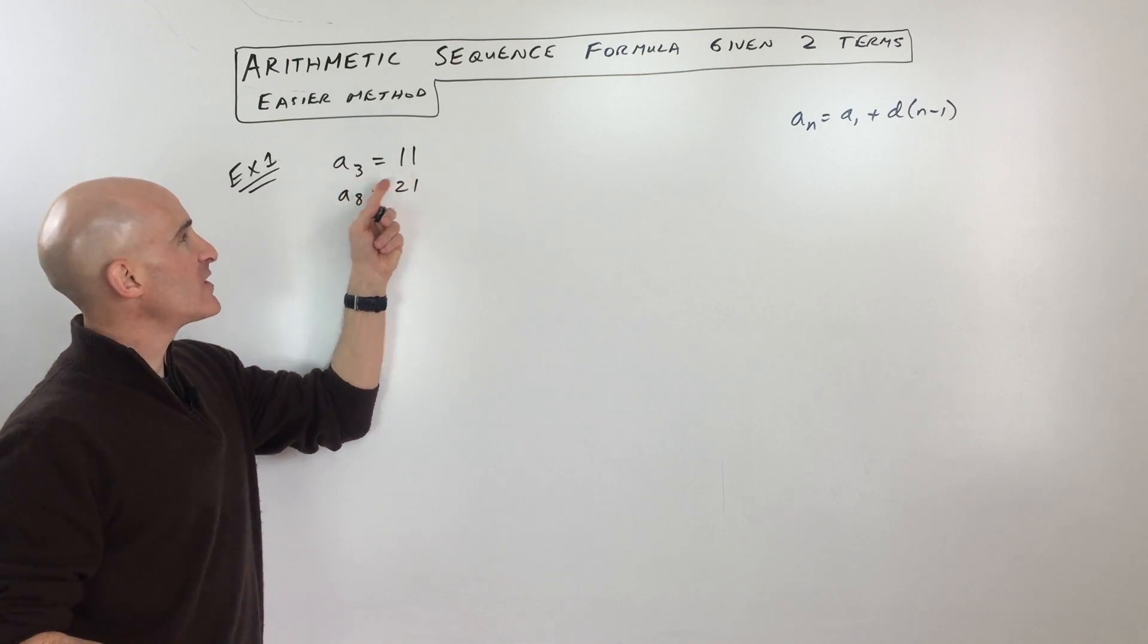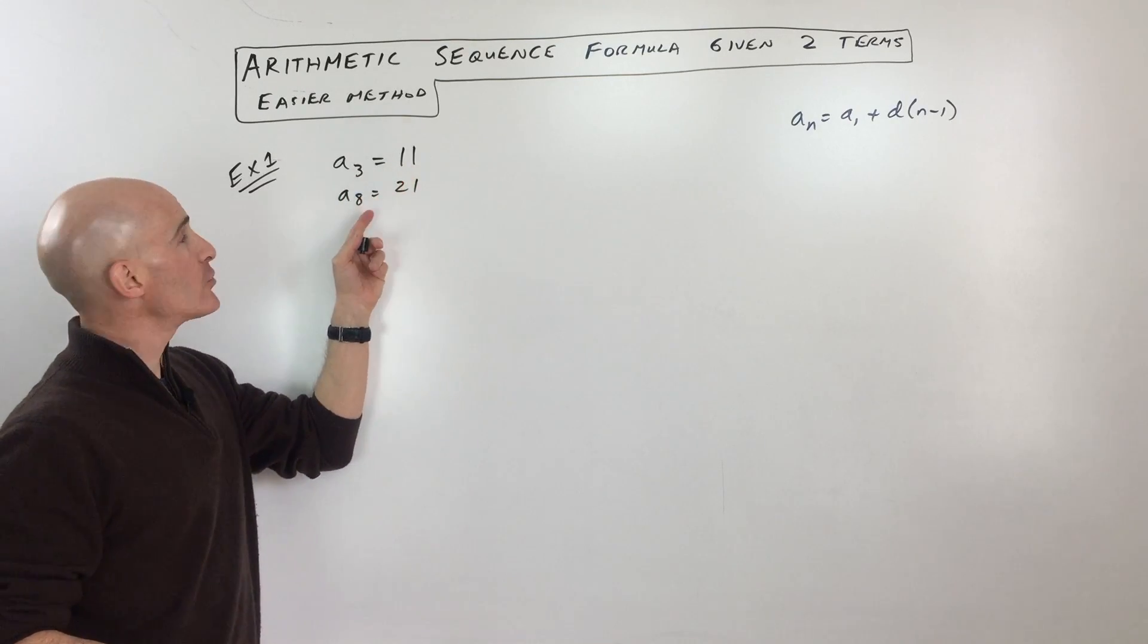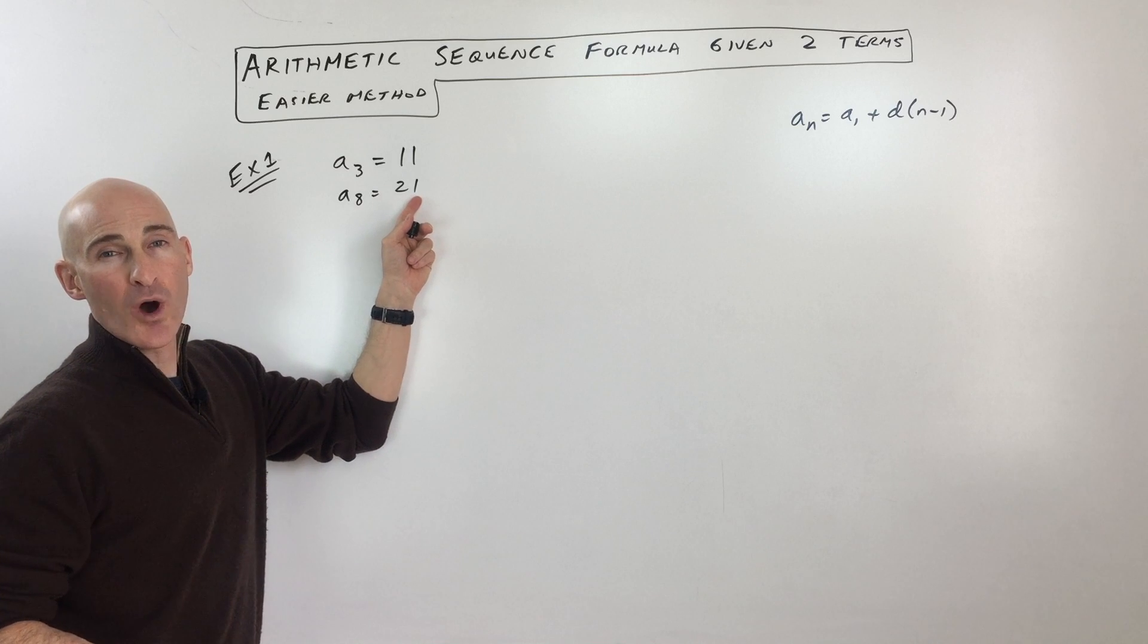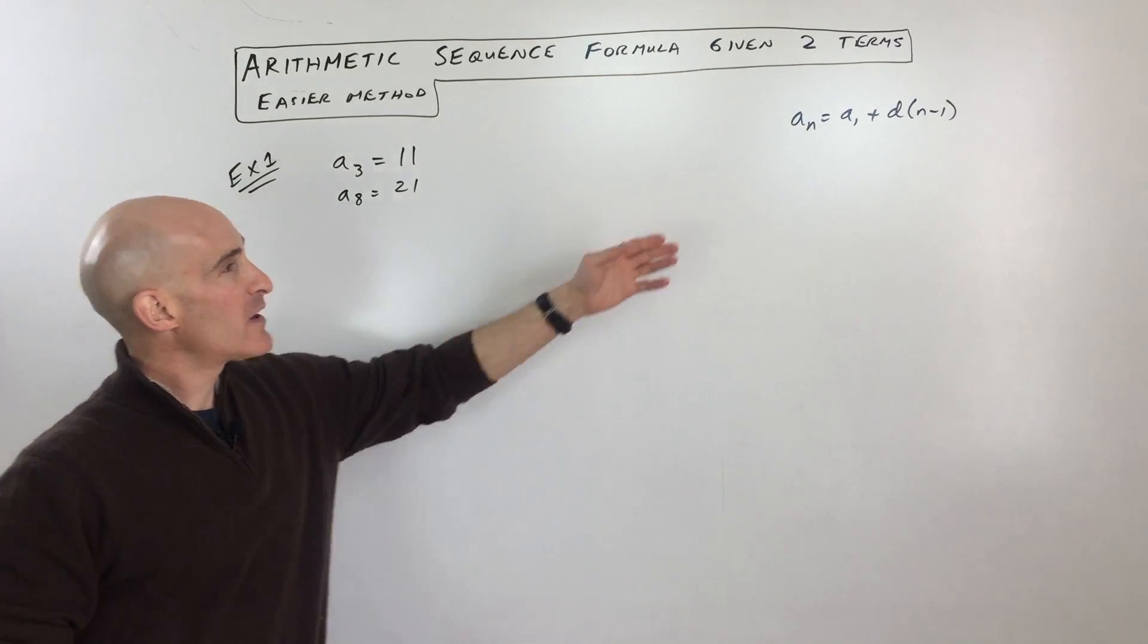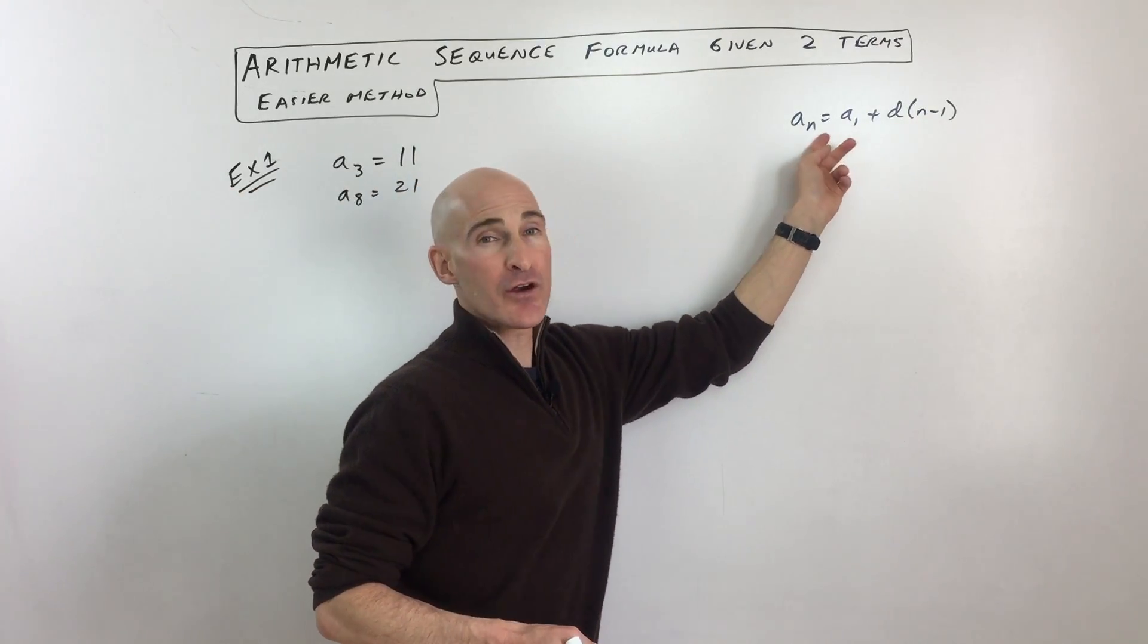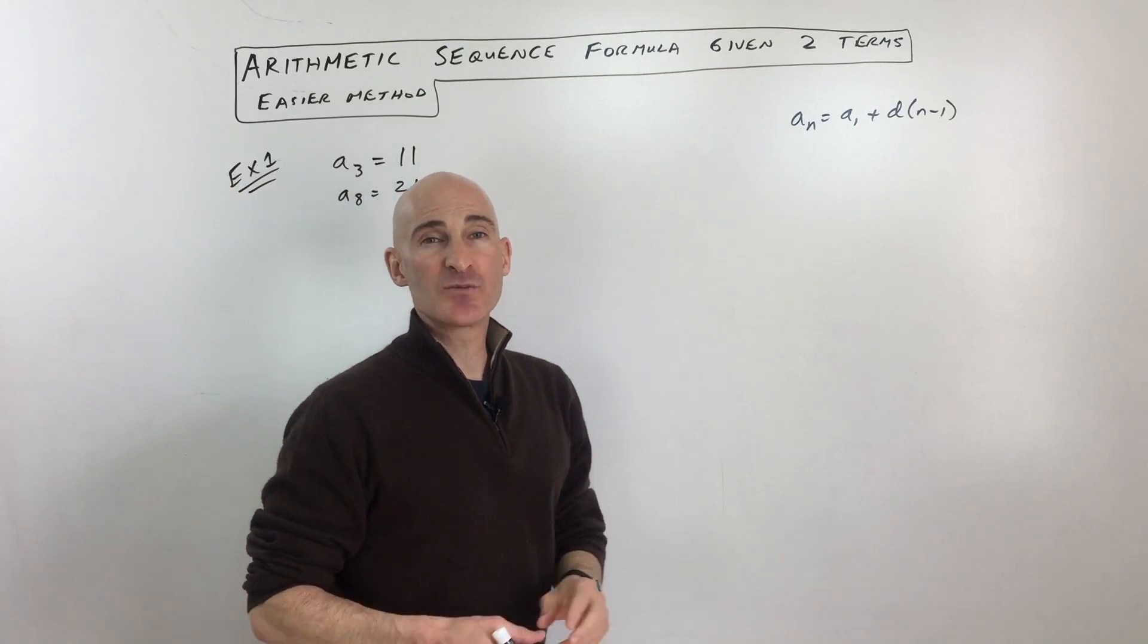See that they're giving us two terms: a sub 3 equals 11, that's the value of the third term, and a sub 8 equals 21. In this video I'm going to show you an easier method. Before, you might have used this formula and written a system of equations, but what I want to show you is...